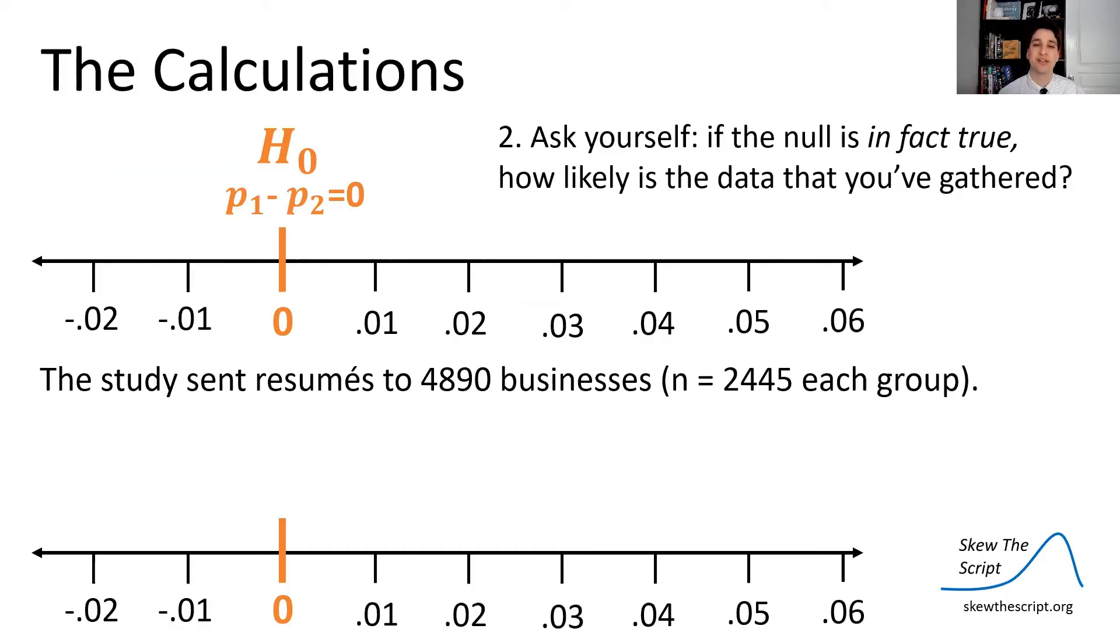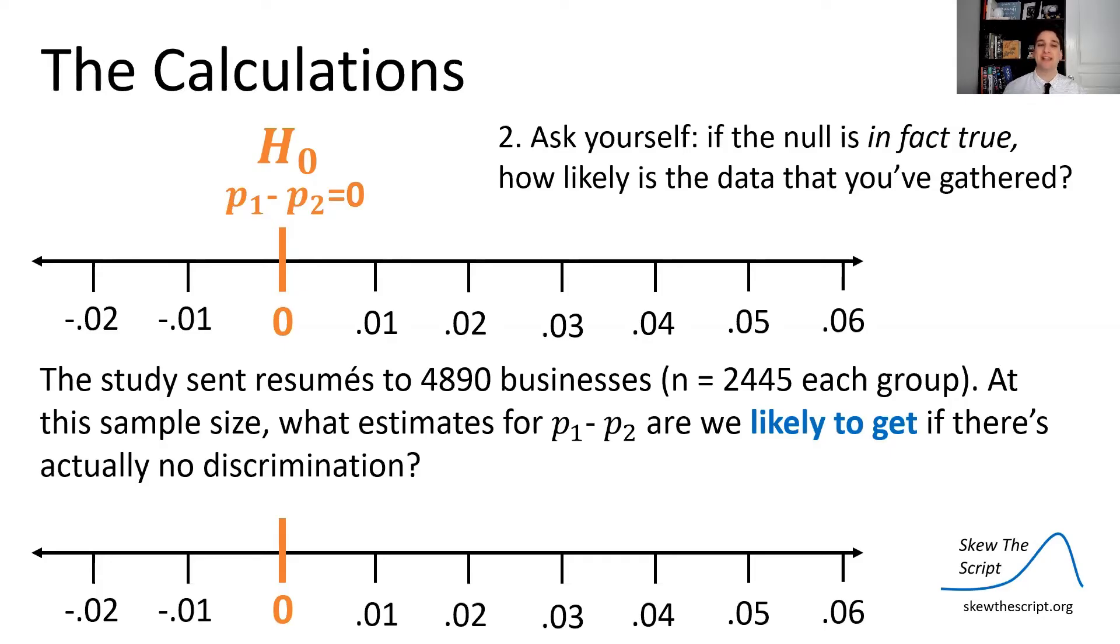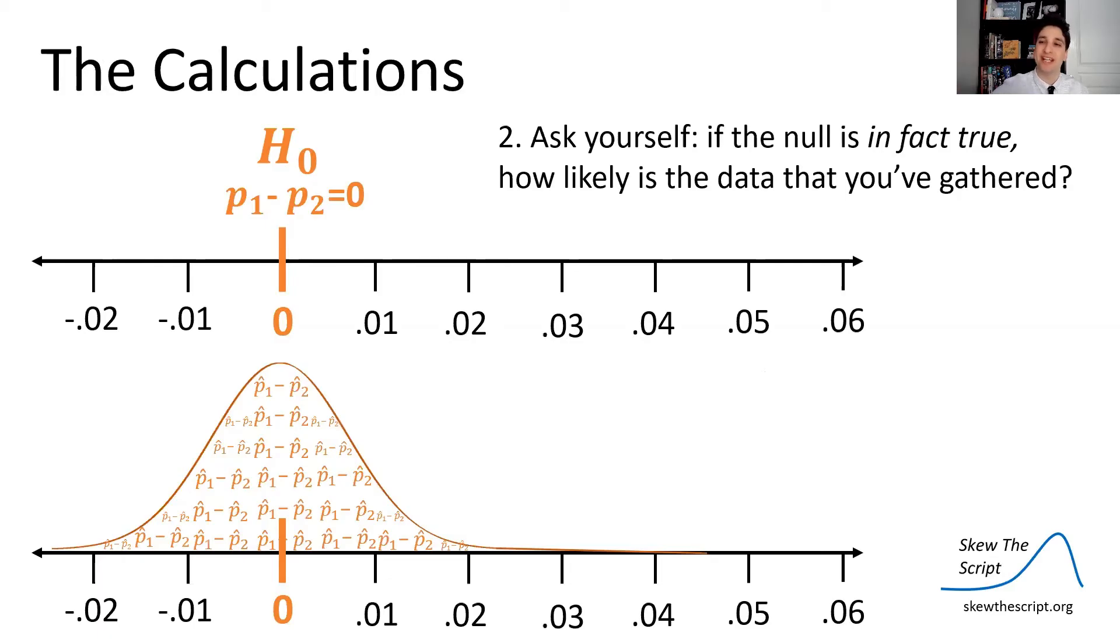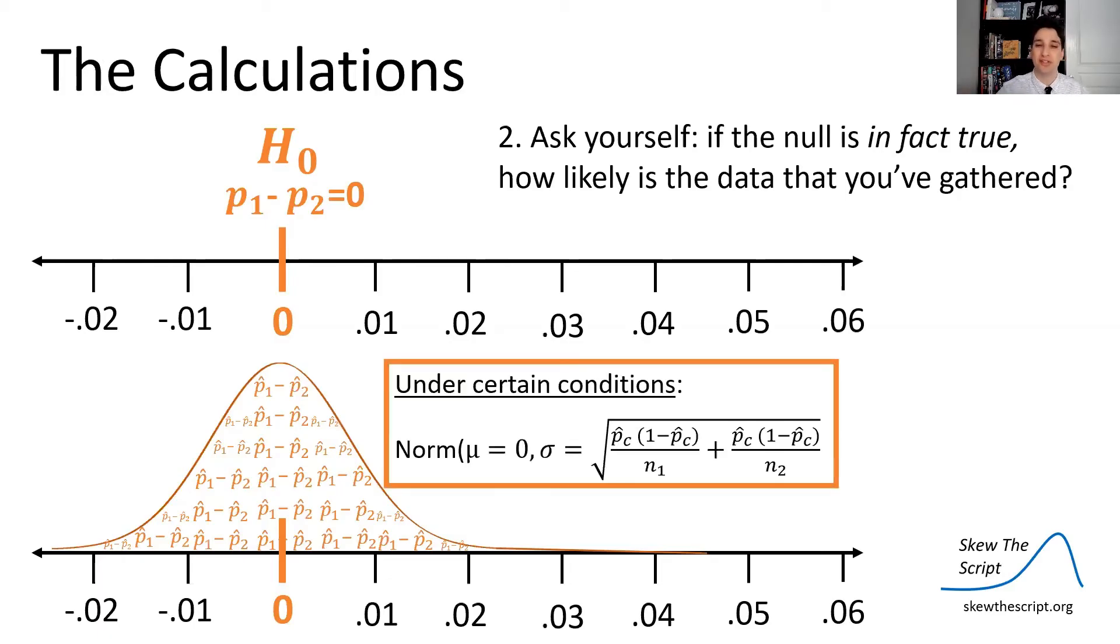So the study sent resumes to 4,890 businesses. And at that sample size, we can see what estimates we would likely get for these proportions subtracted if there was no discrimination, if we do a bunch of random assignments randomly. So let's find the randomization distribution of all possible random assignments and get all possible differences between those sample proportions we could have gotten. That is a sampling or randomization distribution here. And under certain conditions, we know that this will be approximately normal, centered at zero because we're proposing in this world that there's no discrimination under the null hypothesis assumption. So there's no difference. So we're centered at zero with a little bit of variation defined by this formula for the standard deviation.